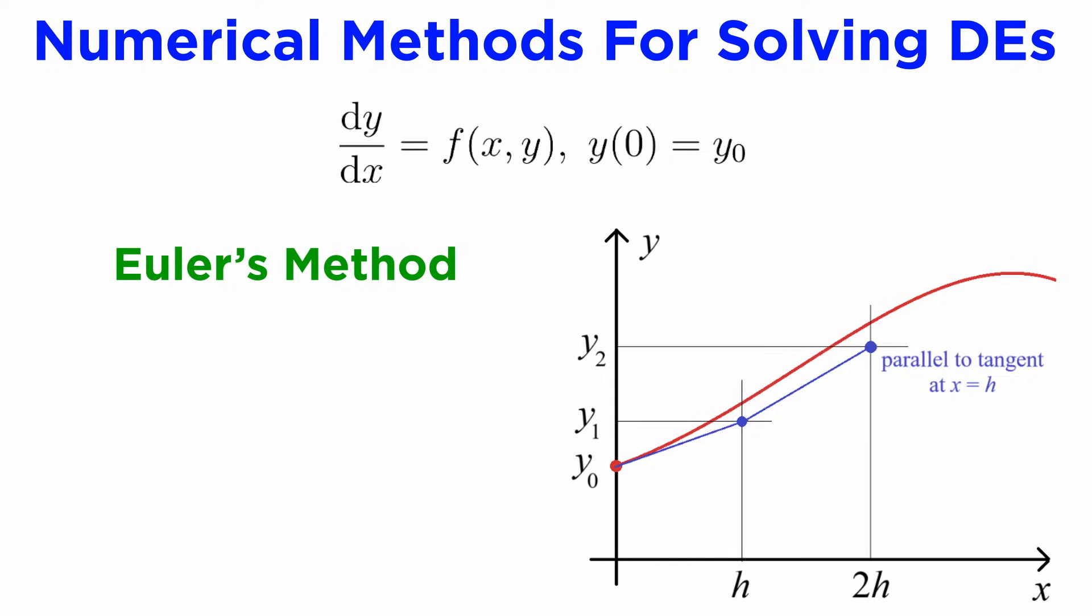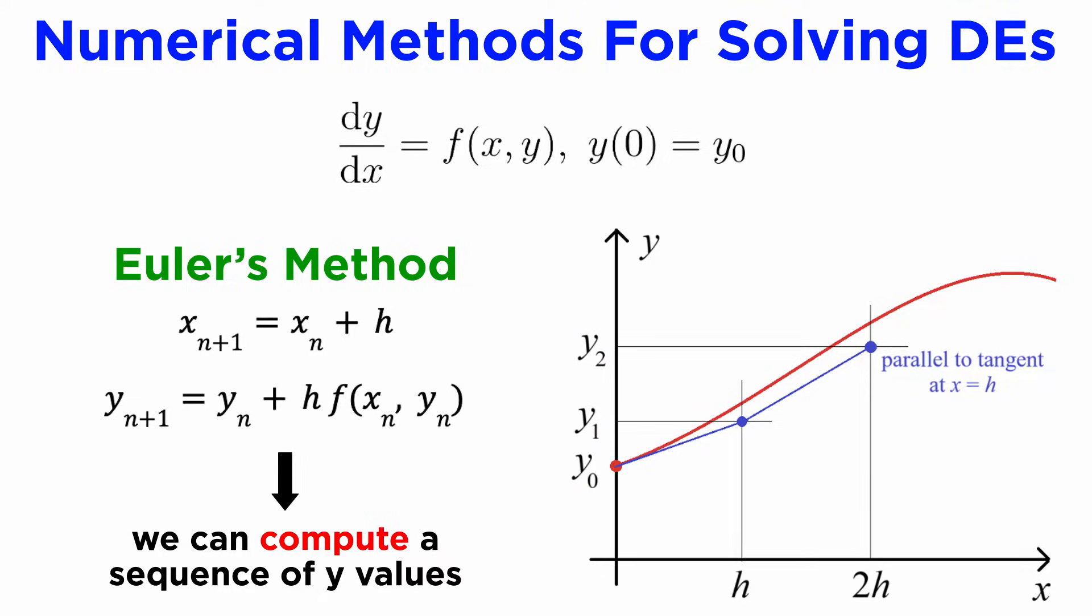In general, we can write down what is known as Euler's method: x_{n+1} = x_n + h, and y_{n+1} = y_n + h·f(x_n, y_n). This allows us to compute a whole sequence of y values, starting from our initial condition, and progressively approximating further and further into our solution, as long as our step size h is small enough to not stray too far from whatever the true solution may be.